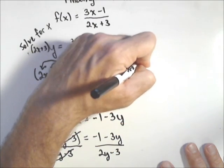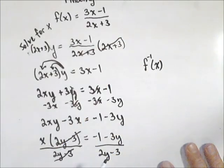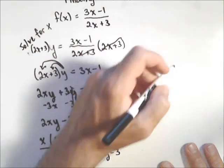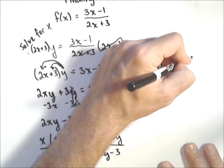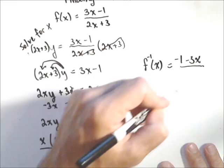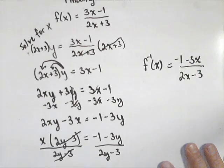Last thing we'll do—if we're asked to write it in inverse notation, we might be asked to write it as f inverse of x. Because we're using x as our input variable, we're going to write the same thing except using x's in place of y's. So (-1-3x)/(2x-3). And there we have our inverse function.